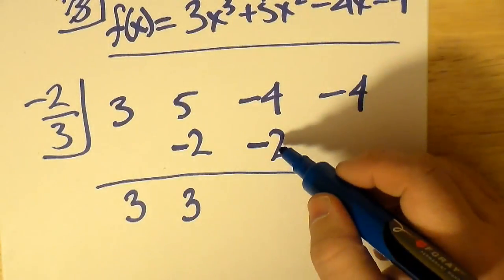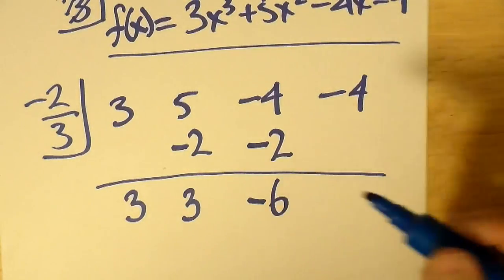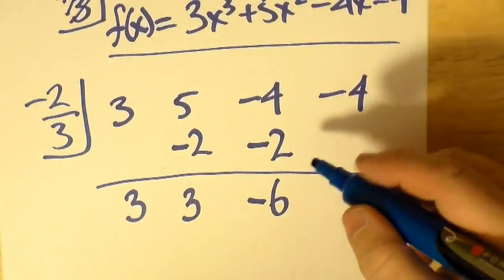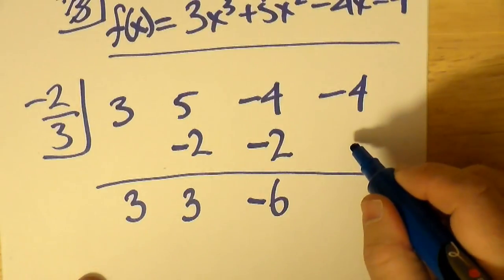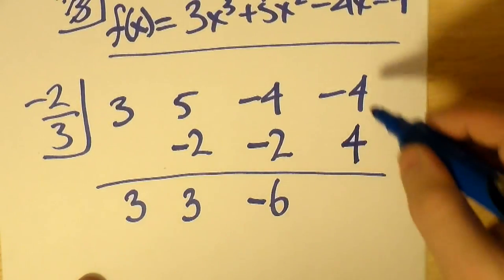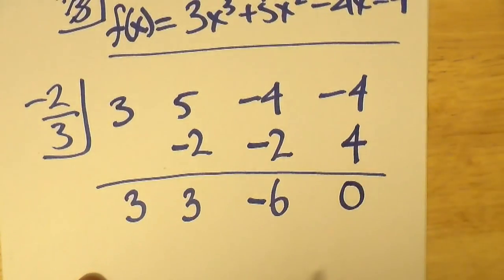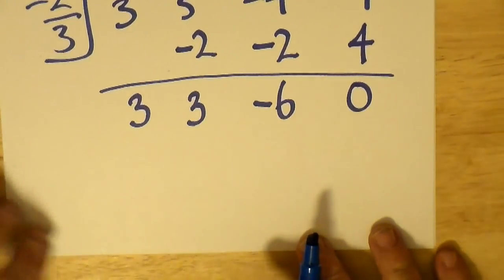3 times negative 2/3 once again is minus 2. Now negative 4 minus negative 2 is negative 6. Multiply that by negative 2/3 to get positive 4, because 3 goes into 6 twice and multiplies by negative 2.